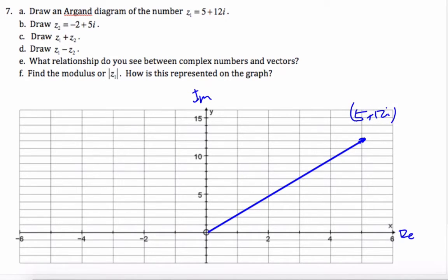Z2 will be similar, but it will go negative 2 up 5, and that's negative 2 plus 5i. And if I draw that, I can see that it is this here.